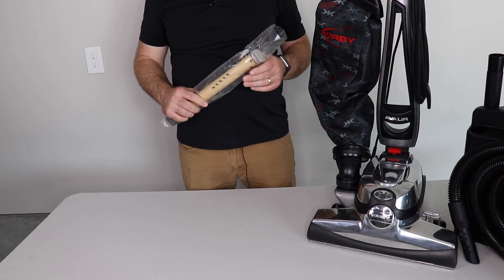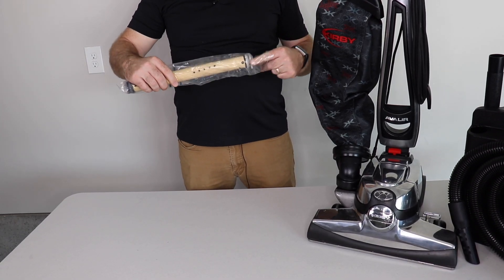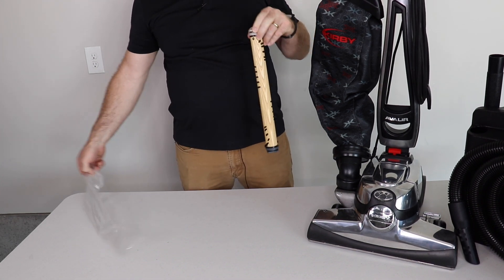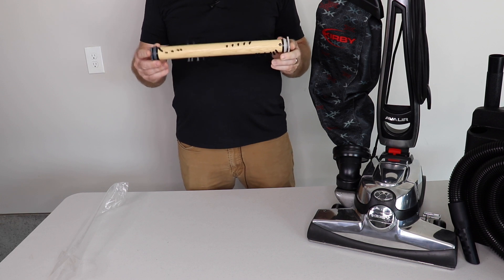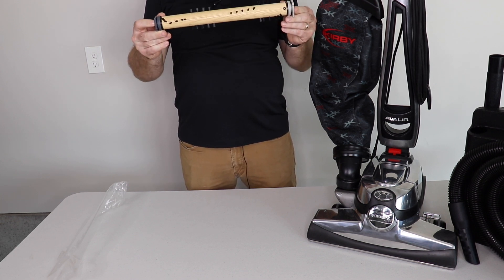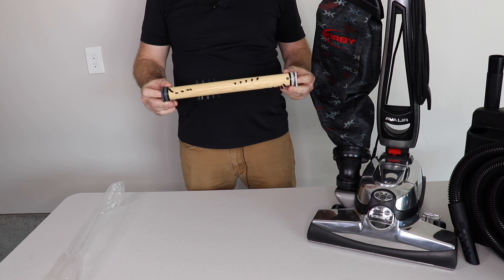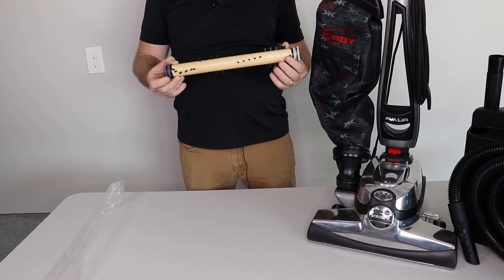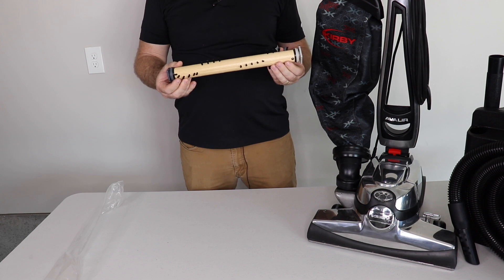So the first thing we're going to go over is adjusting your brush roll. So the cool thing about Kirby vacuums is they're one of the only vacuum cleaners where your brush roll can actually be adjusted. And by adjusted I mean it can be higher off your floor or closer to your floor. And so really you can adjust your brush roll for the carpet or flooring that's in your house.